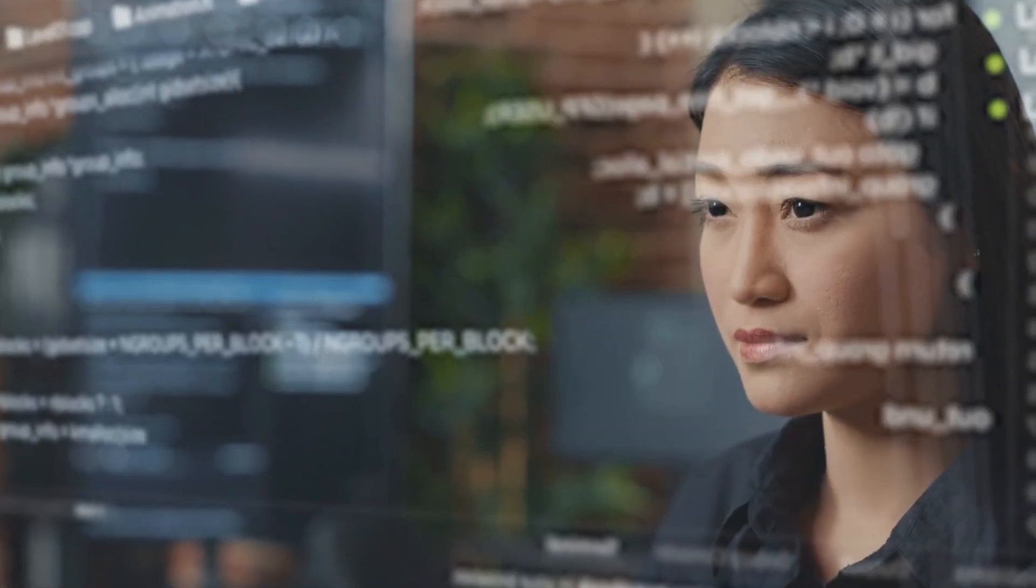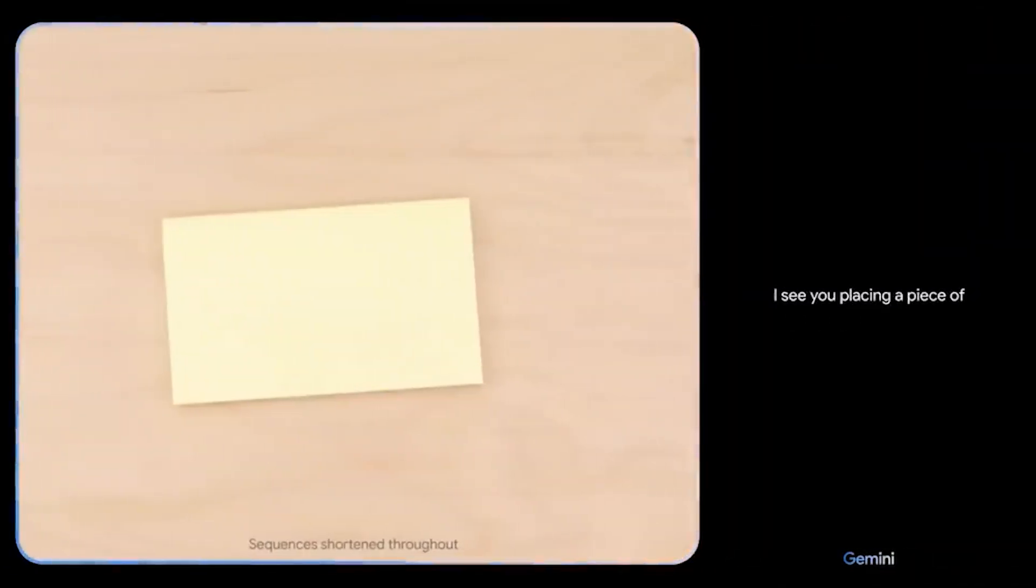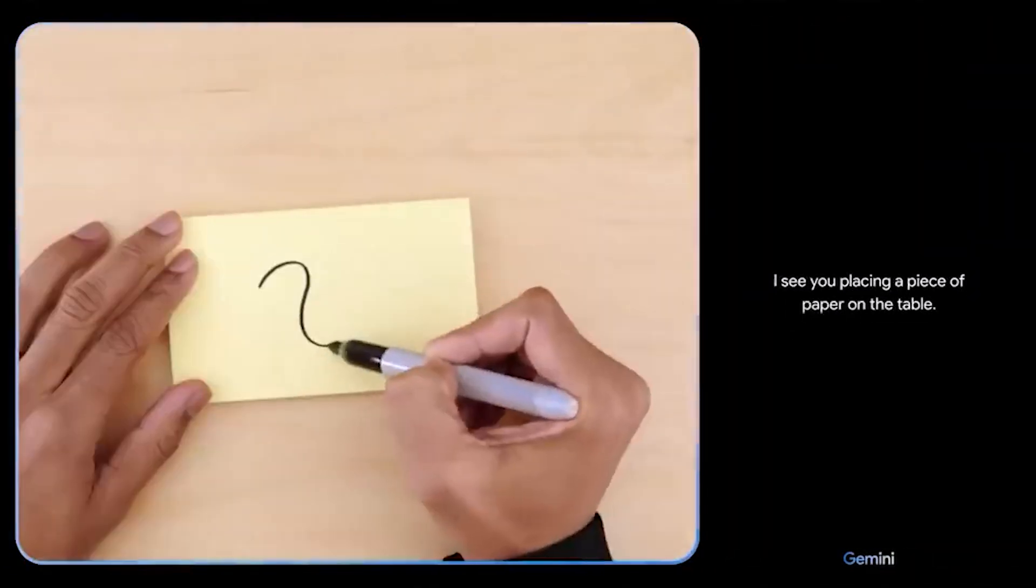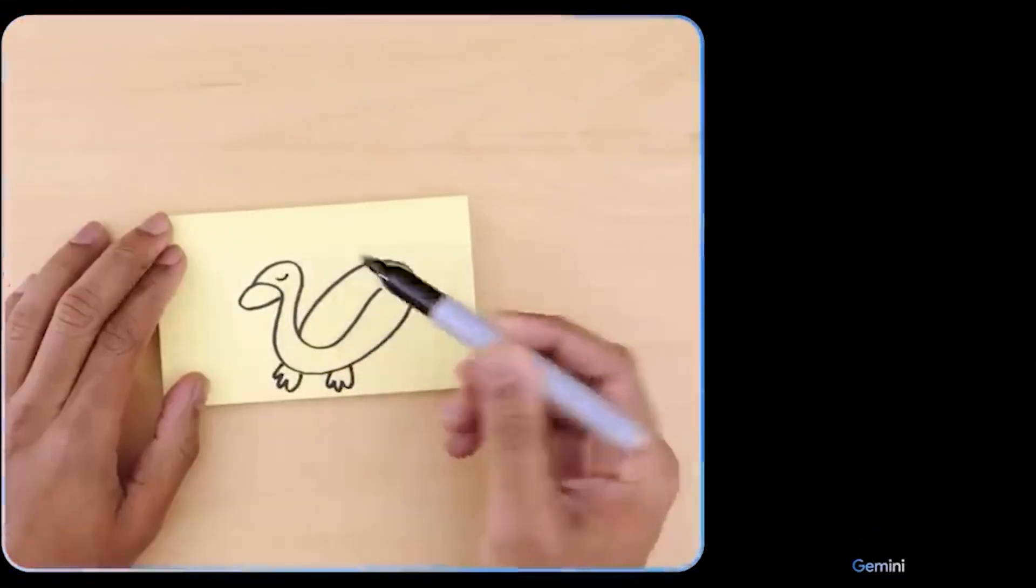Let's talk about how Gemini can be used in real life, based on the cool stuff we've seen in its demos. In one of Gemini's demos, it looks at a piece of paper and sees a squiggly line. When the line changes, Gemini notices it's now a bird and then a duck.